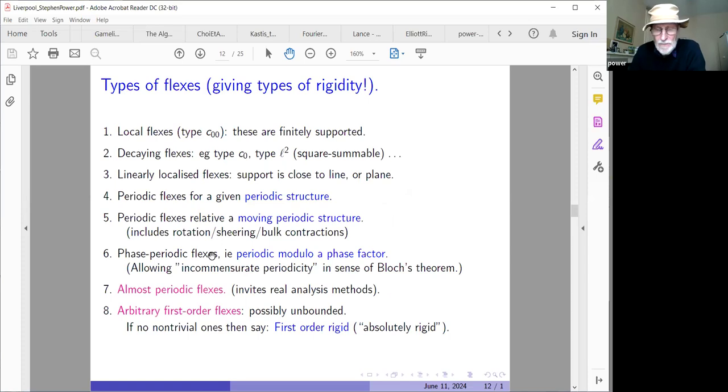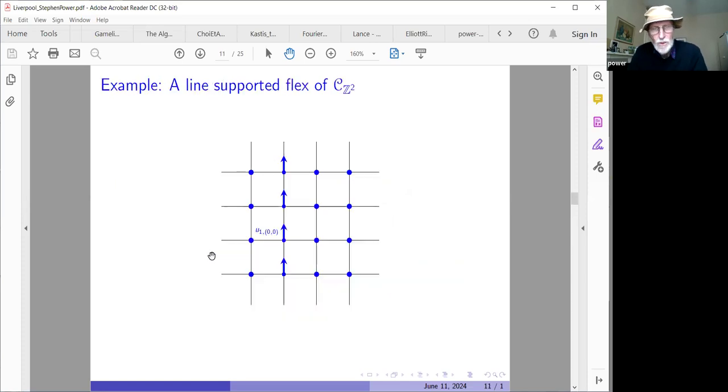So these are called velocity vectors. Velocity field is maybe a better word because that invokes the entire set of nodes and their velocities. Velocity vector I'm usually using for this infinite set of velocities on the nodes, on the joints.